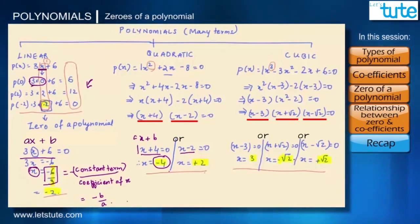But when we have more than one zero for any polynomial, we could have different relations between the zeros and the coefficients. And that we will see in the next session.